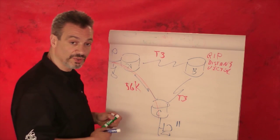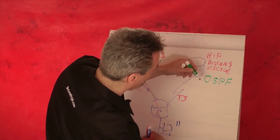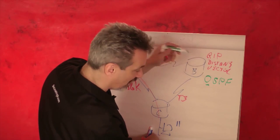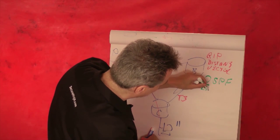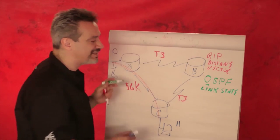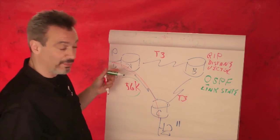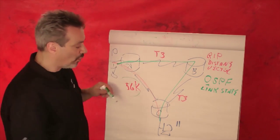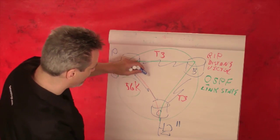A much smarter protocol was developed called OSPF — there are a bunch of them, but OSPF is open source, so that's the one you typically deal with on a test. If I had to, I'd run Cisco's EIGRP. OSPF is a link state protocol. A link state protocol is smarter — it takes into account the state of the link right now, and by default accounts for bandwidth.